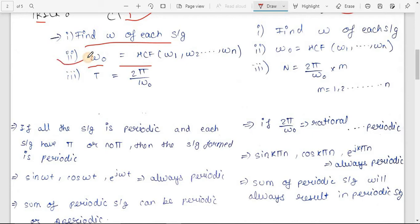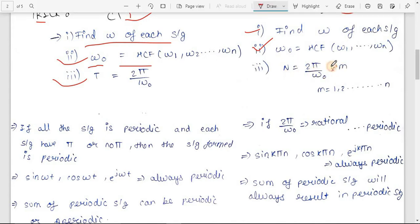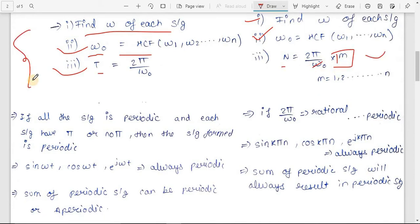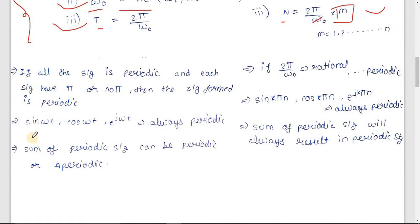The fundamental frequency formula is HCF of all the omegas. Once you calculate this fundamental frequency (ω₀), you can directly get the fundamental time period using the formula: T = 2π/ω₀. In discrete time, you also find ω₀ as HCF of all omegas, but the time period formula is slightly different: T = (2π/ω₀)·m, where m is the smallest positive integer that cancels out the denominator.